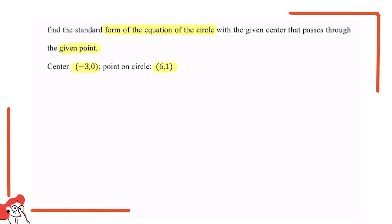Now let's organize the information we get from the question. This question wants us to find the standard form of the equation of a circle with the given center, which is (-3, 0), that passes through the given point, which is (6, 1).